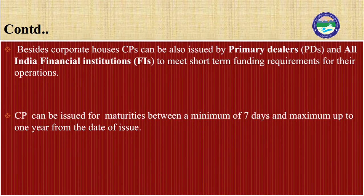Besides corporate houses, commercial paper can also be issued by primary dealers and all-India financial institutions to meet short-term funding requirements. A primary dealer is a firm that buys government securities directly from the government with the intention of reselling them to others, thus acting as a market maker of government securities. Commercial paper can be issued for maturities between a minimum of seven days and a maximum of up to one year from the date of issue.